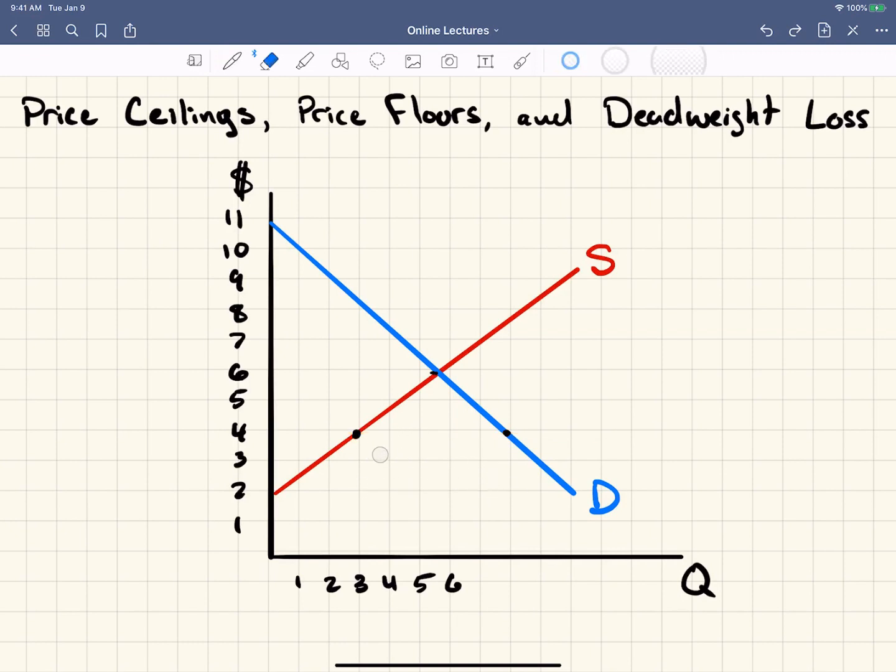Now, the other side of this is what we call a price floor. And this is where the government says you can't drop prices any lower. So normally, again, the equilibrium price here would be six.